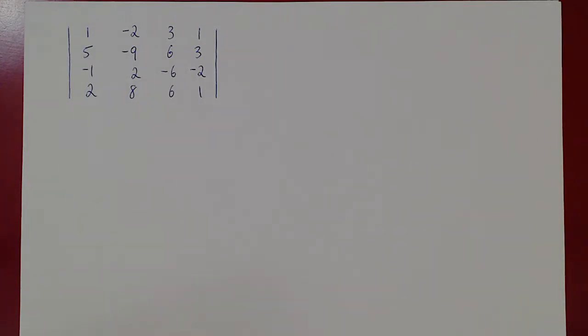That's really bad. The idea is to get some zeros in this matrix. The more zeros we have, the fewer cofactors we have to find. We can use row operations or column operations, whichever gives us the easiest way of getting zeros in the matrix.